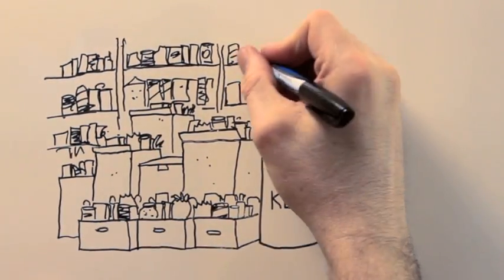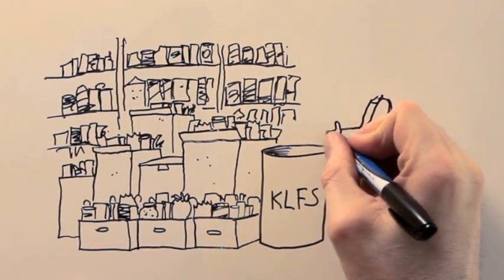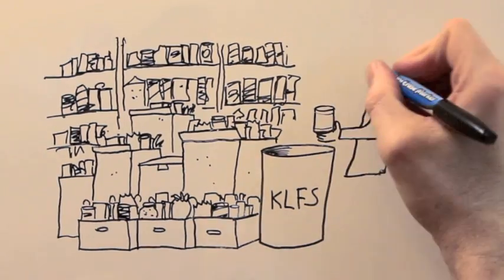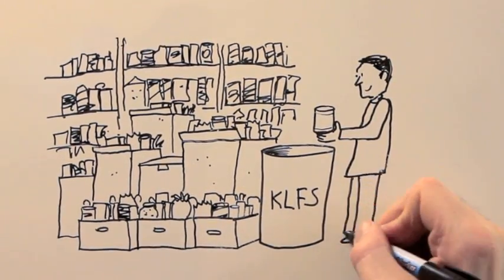But where does the food source get the food it gives out? Some of it comes from a place in Toronto where grocery stores send their dinged-up cans and ripped boxes. But mostly, the food source gets its food from you.